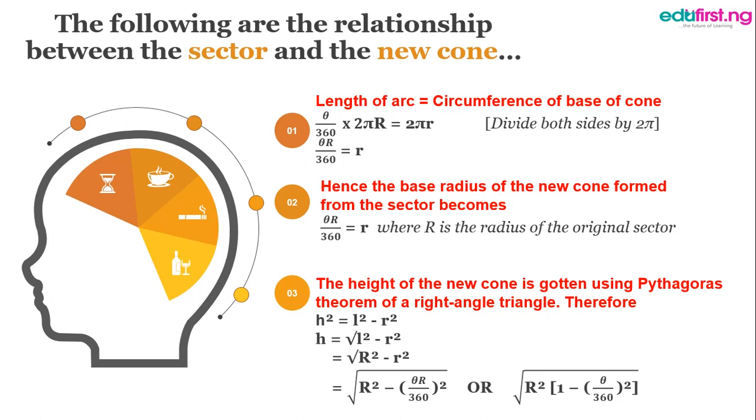In our cone diagram, we have alpha. Alpha as the vertical angle of the cone. It is very important that you note all this.